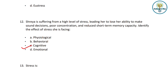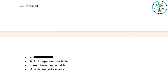Next question: Stress is what? Options: an independent variable, an intervening variable, or a dependent variable. Stress is an independent variable — it is a variable in which you can make changes. These are variables that can be manipulated. There is a link in the description box for more on independent and dependent variables from Class 11 topics. The correct answer is independent variable.